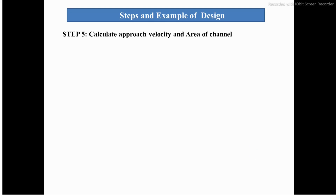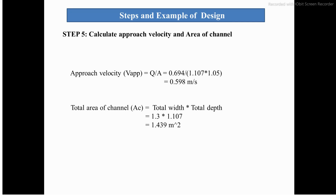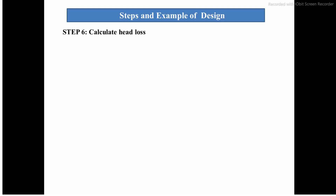In step 5, we calculate the approach velocity and the area of the channel. The approach velocity = Q / total area = 0.598 m/s. The total area of the channel Ac = total width × total depth.